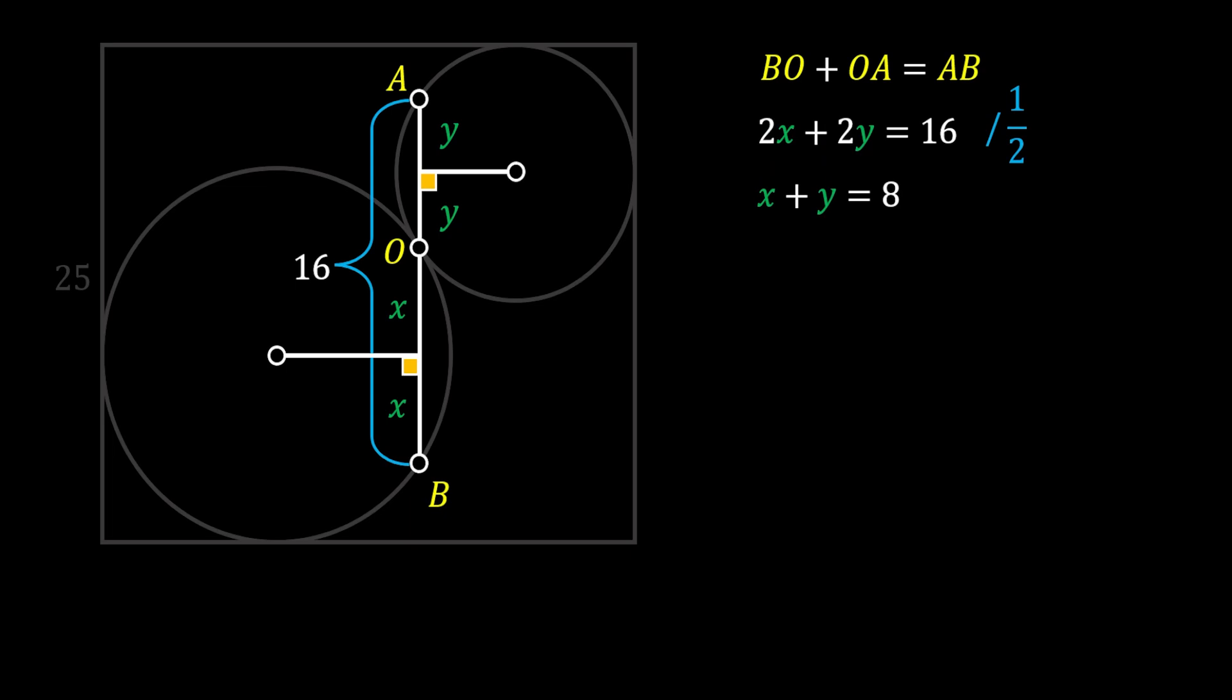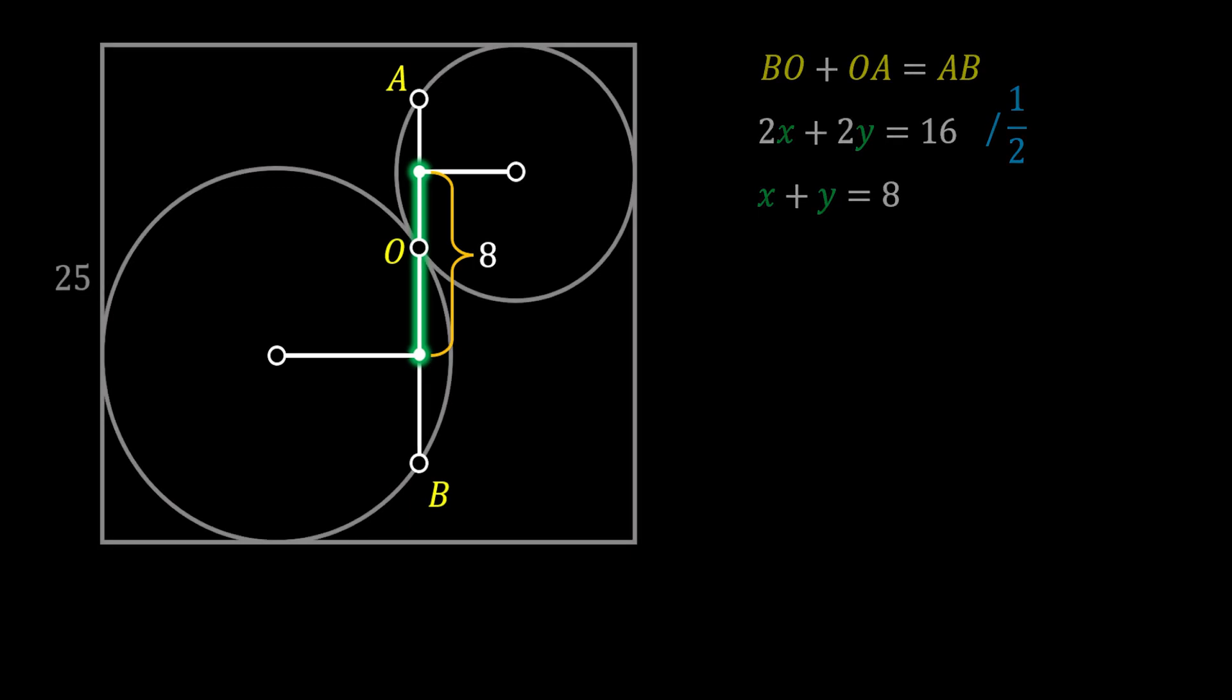Now, if you take a look at our sketch again, you can see that this vertical line between two perpendicular bisectors of our two circles is equal to X plus Y which is equal to 8. Alright, so now let's pull the vertical radius for our bigger circle and let's label it as capital R. We will do the same thing for our smaller circle and label its radius as small r.